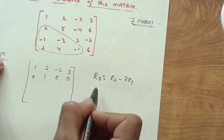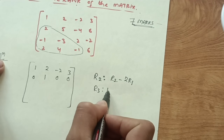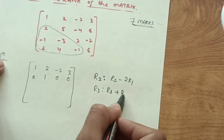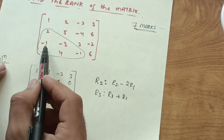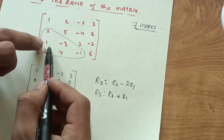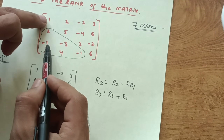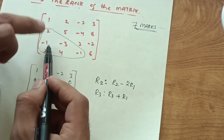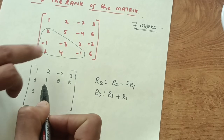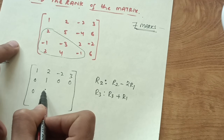Now I do the transformation on row 3: R3 → R3 + R1. This makes the first entry 0 as well. Then -3 + 2 = -1, and the calculation continues for the remaining entries.